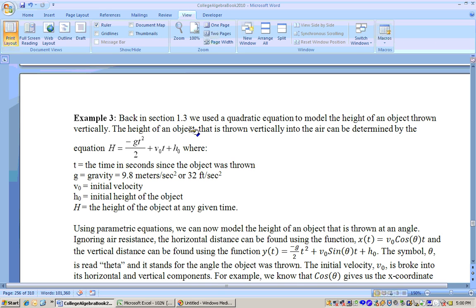Back in section 1.3, we did quadratic equations. One particular example was finding the equation of a ball thrown vertically up into the air, straight up and fell straight back down. You can get that equation using this formula where h is the height, g was gravity and we used feet per second squared so we substituted in negative 32 or 32 for g, then v sub nought was the initial velocity, and h sub nought was the initial height.